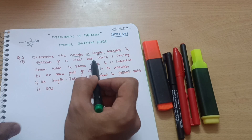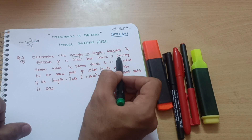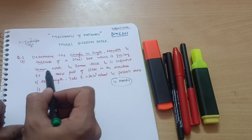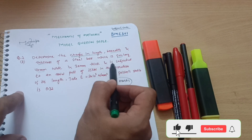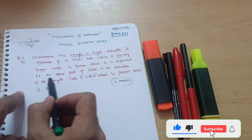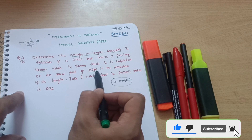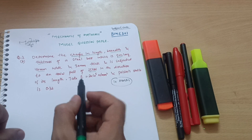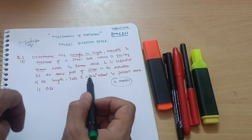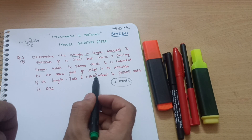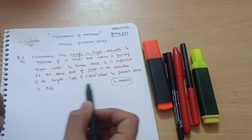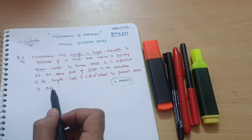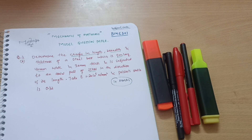The bar is subjected to an axial pull of 35 kilo newtons in the direction of its length. Young's modulus E is given as 2×10⁵ N/mm² and Poisson's ratio is also given as 0.32. So what should be your approach to deal with these types of problems?